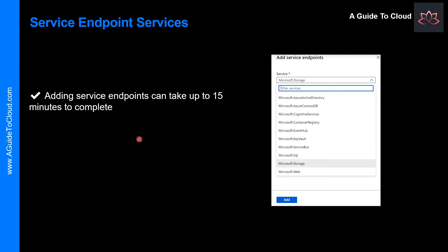Existing Azure service firewall rules using Azure public IP addresses will stop working with this switch, so please ensure Azure service firewall rules allow for this switch before setting up service endpoints. You may also experience temporary interruption to service traffic from this subnet while configuring service endpoints. It is easy to add a service endpoint to an Azure virtual network.